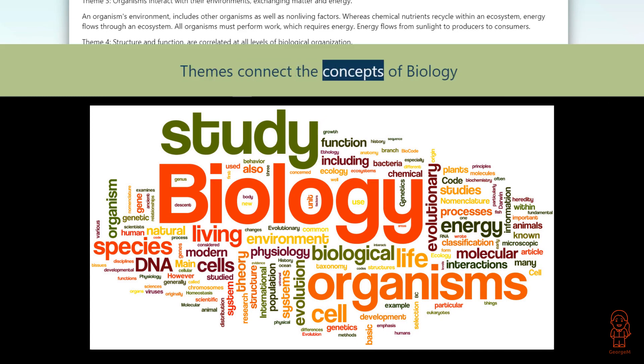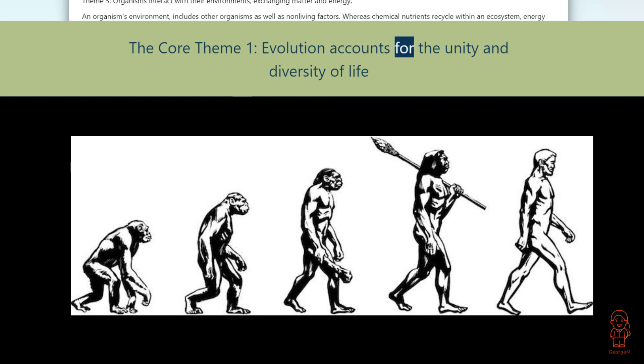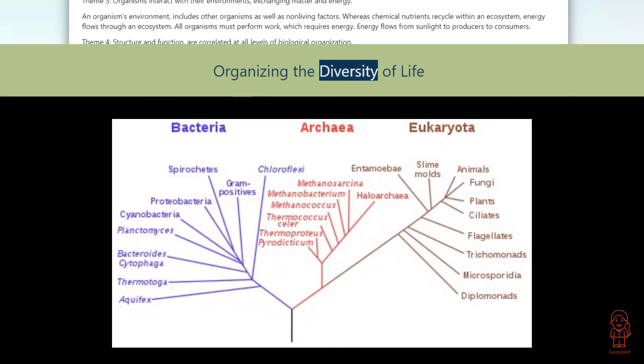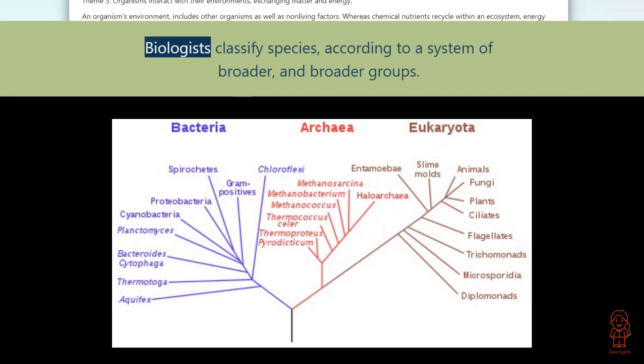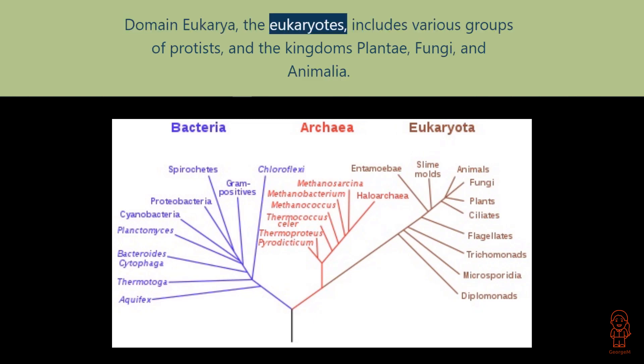Themes connect the concepts of biology. Core Theme 1: Evolution accounts for the unity and diversity of life. Organizing the diversity of life, biologists classify species according to a system of broader and broader groups. Domain Bacteria and Domain Archaea consist of prokaryotes. Domain Eukarya, the eukaryotes, includes various groups of protists and the kingdoms Plantae, Fungi, and Animalia.